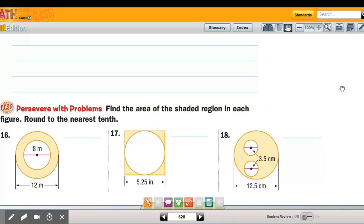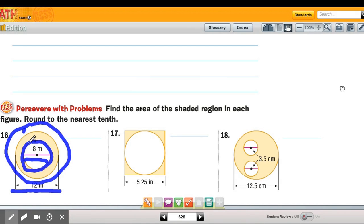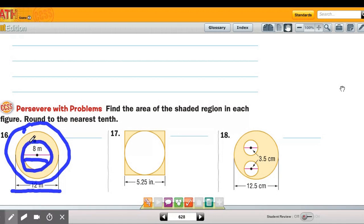They just want to know the shaded region. So like for example number 16, you have 12 all the way across and 8 in here. Now neither one of those is the radius, but if you find the area of the whole big circle and then subtract this circle in here, that'll tell you what the area of the shaded part is.